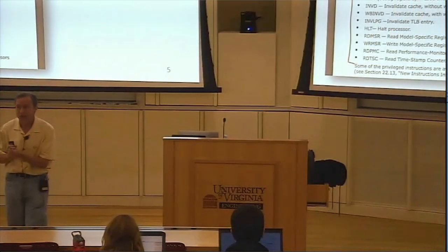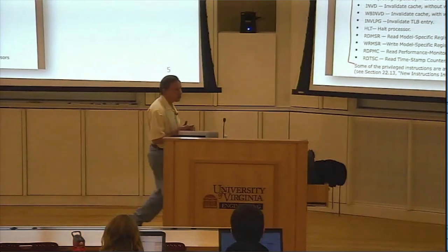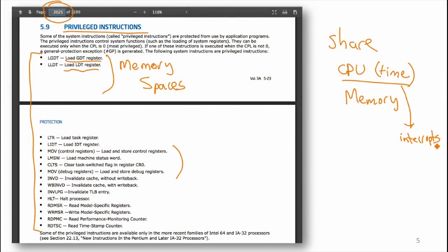There are also some privileged instructions about control registers — those are not about setting up memory spaces directly. The other really privileged thing is that only kernel code can handle interrupts. In order to share time well, only the kernel can receive these timer interrupts. And there must be a table stored in memory of where to go when there's an interrupt — a table that only the kernel can write to.